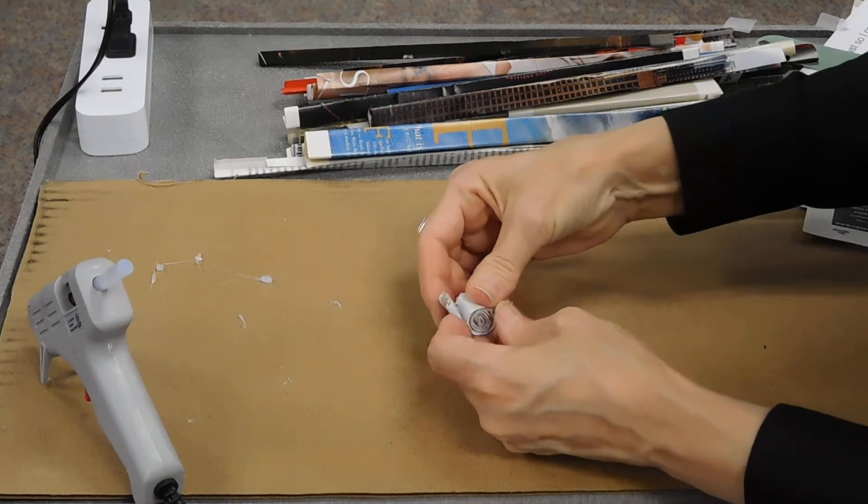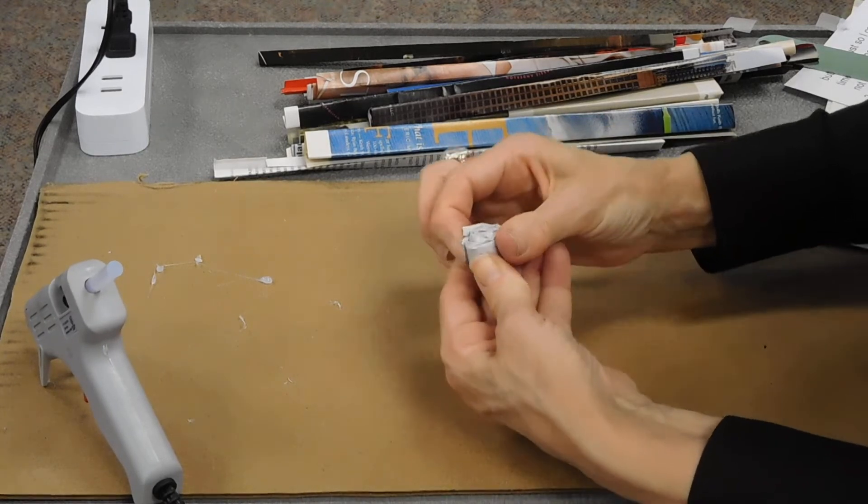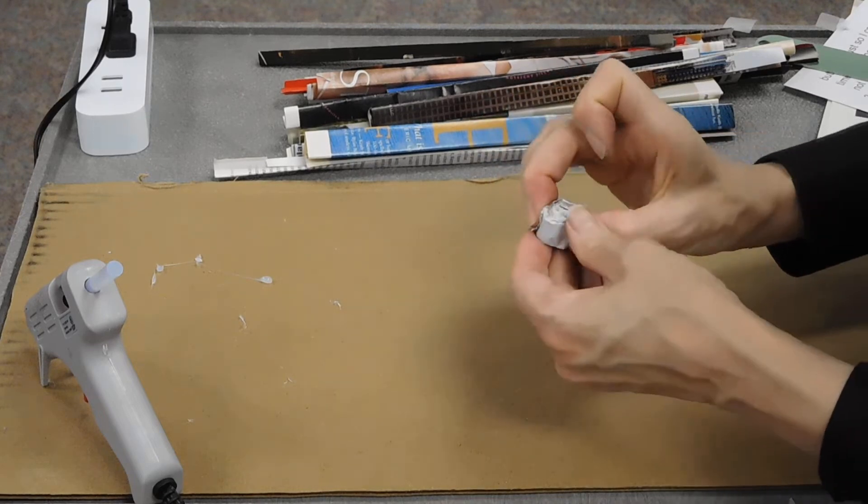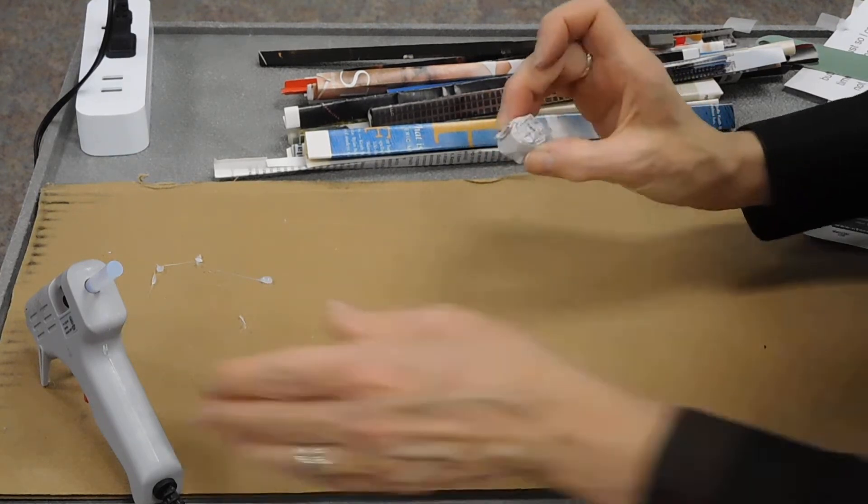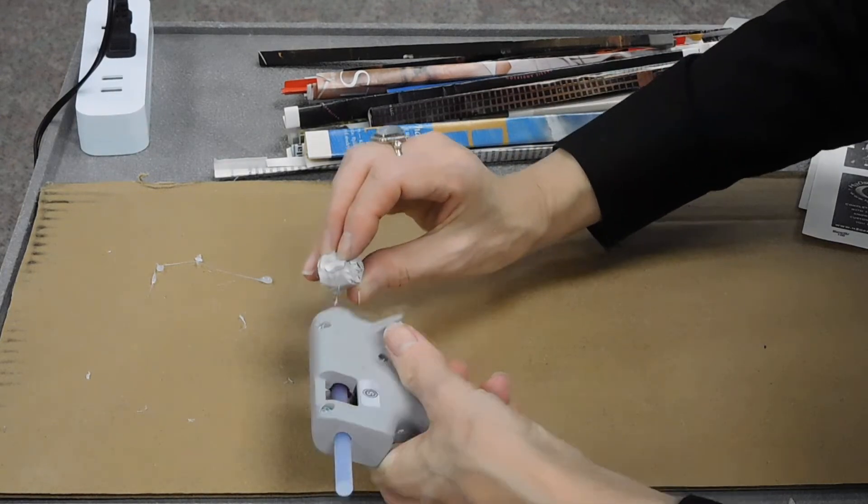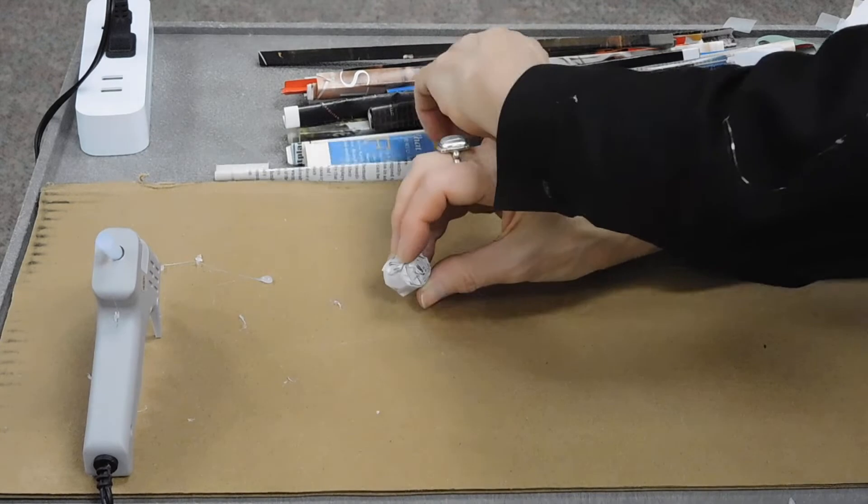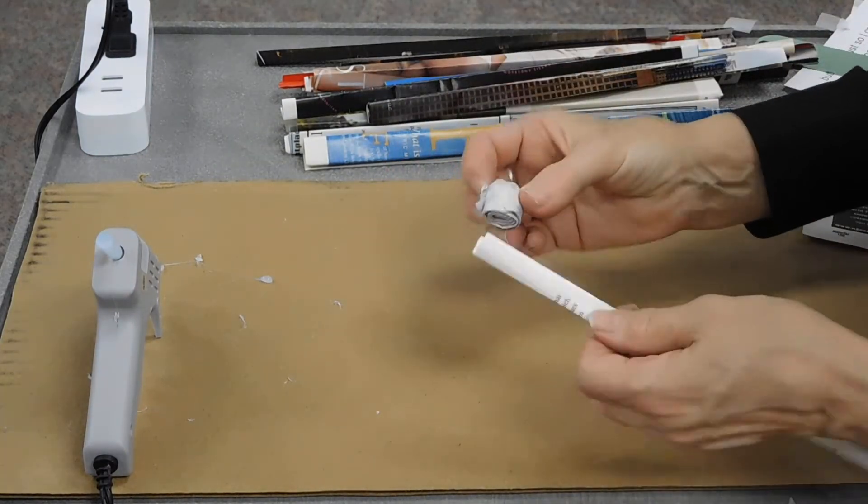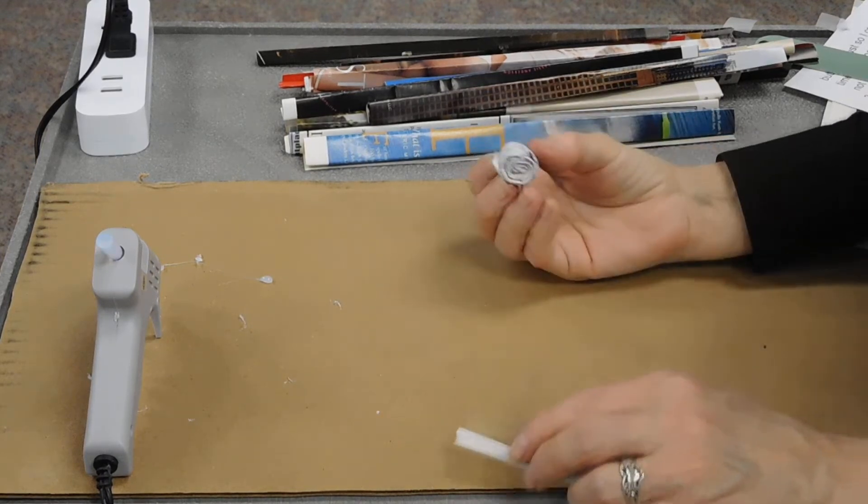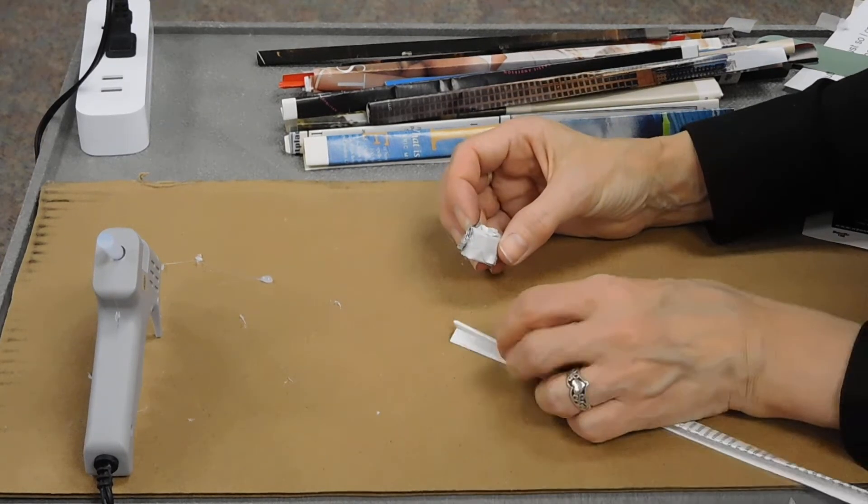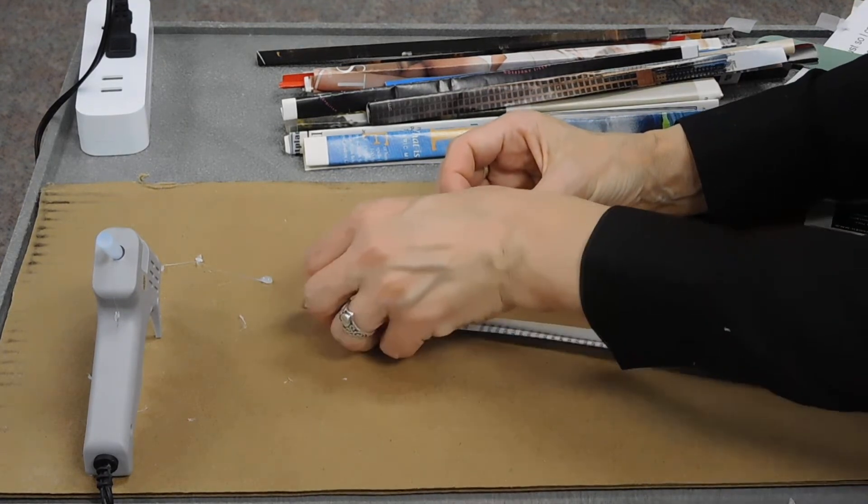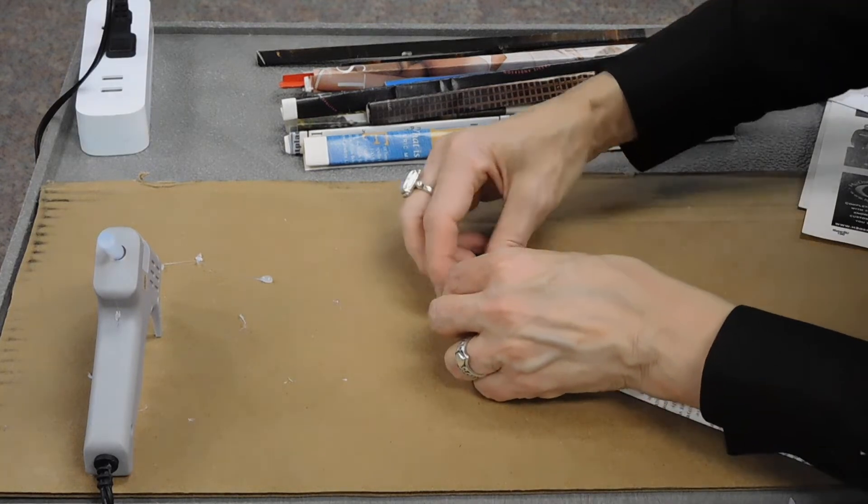So now at this point you might need to hold it a little. You might not. It all depends on how it's going for you. At this point I just add a drop of glue there and add on another piece of paper. I like to make sure that my open edge is all facing the same way. So I like it in and upward as I'm rolling.